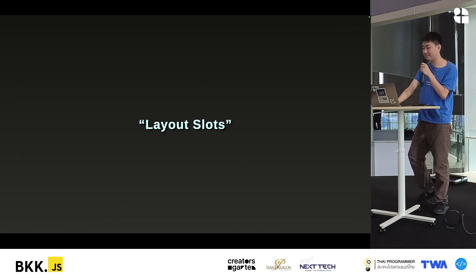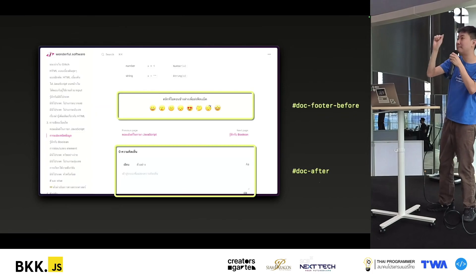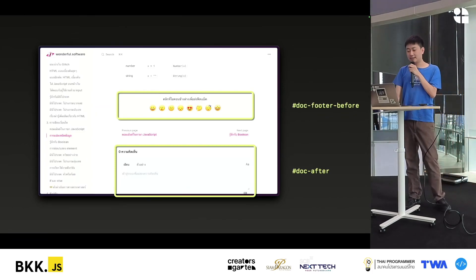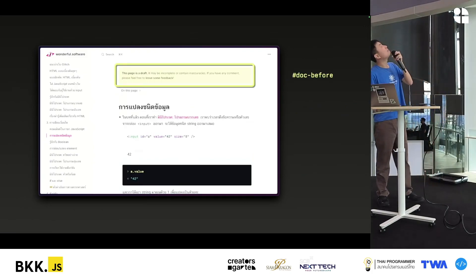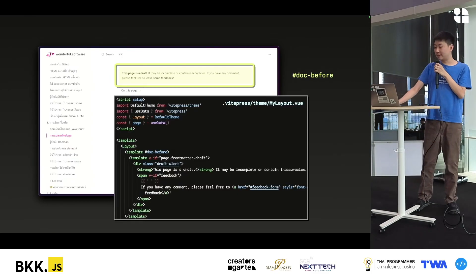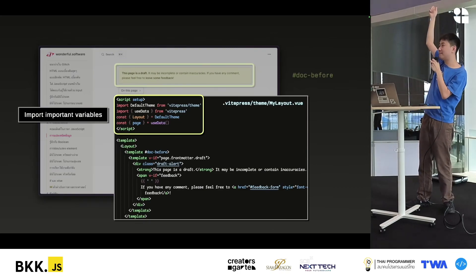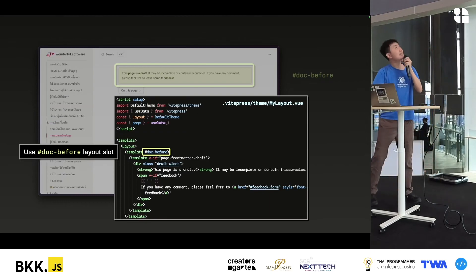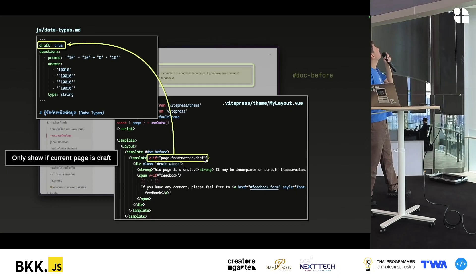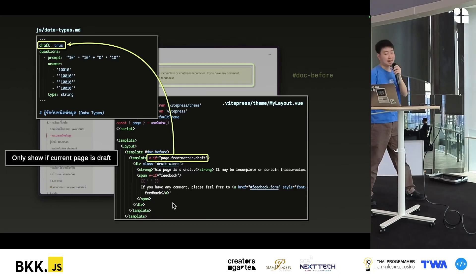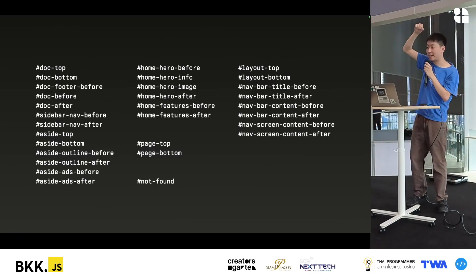But let's look at two parts. I use a feature called Layout Slot. In the default theme, there will be different slots. For example, DocFooter Before and DocAfter. These slots allow us to add components to specific positions in the layout of the web. DocFooter Before will appear near the bottom of the content area. DocAfter appears after the content. DocBefore appears at the top. The front matter of the page can be used to conditionally show content — for example, if a page is marked as a draft, I can show a notice here. The VitePress API provides around 30 layout slots in the default theme for us to use.